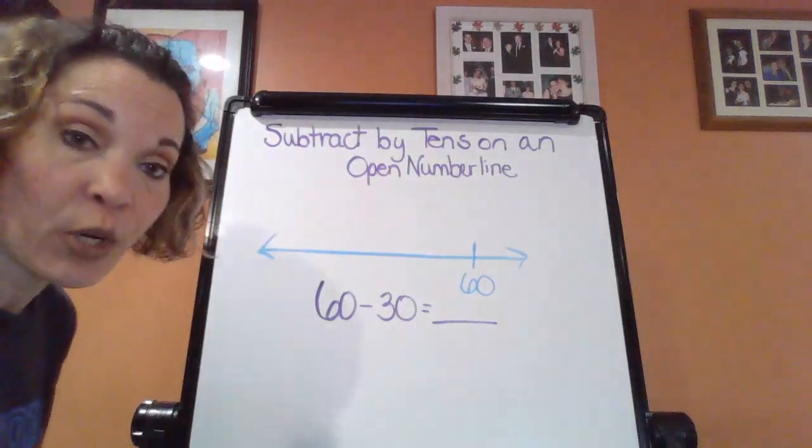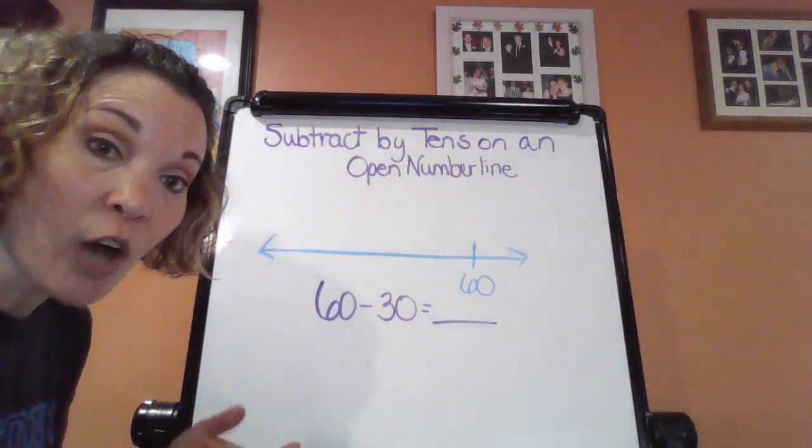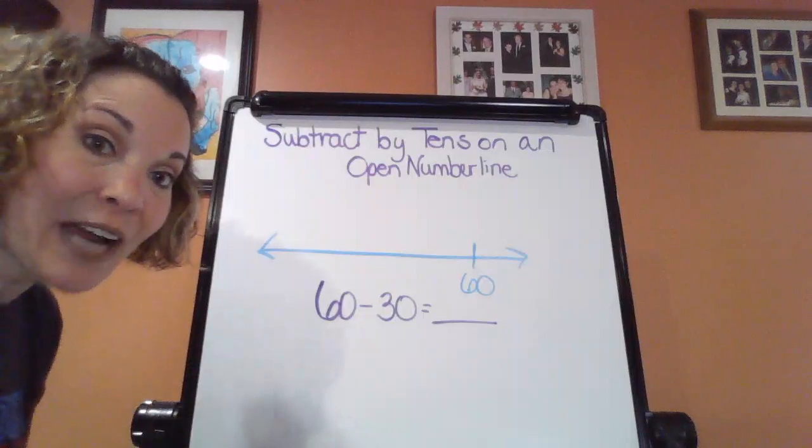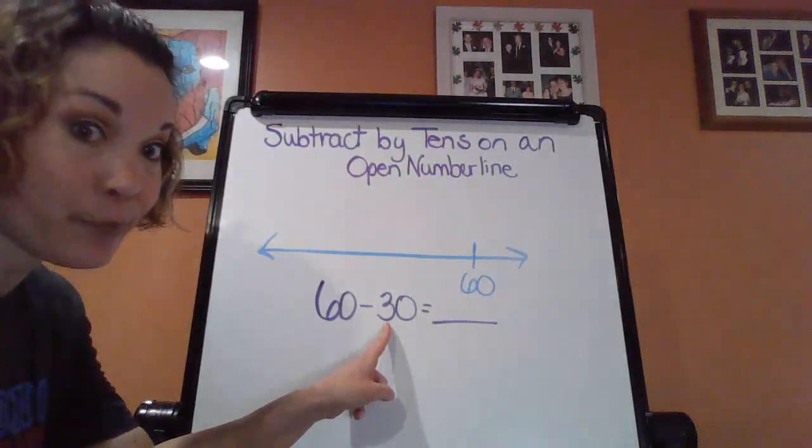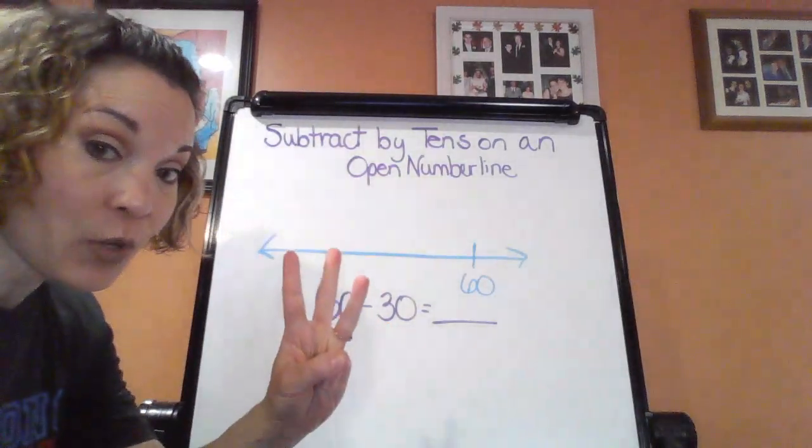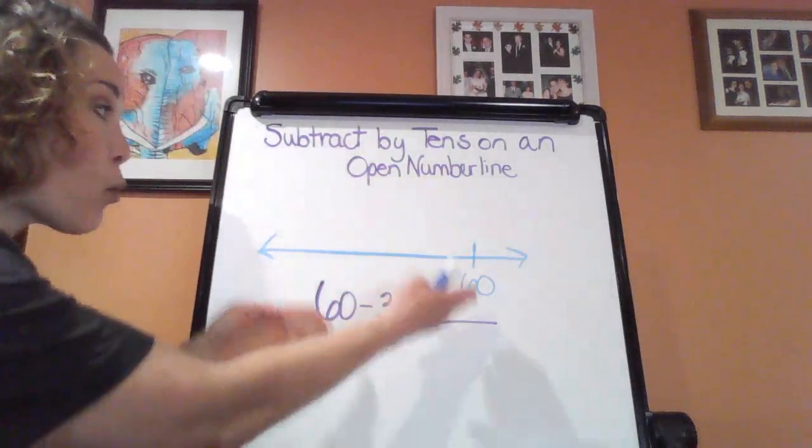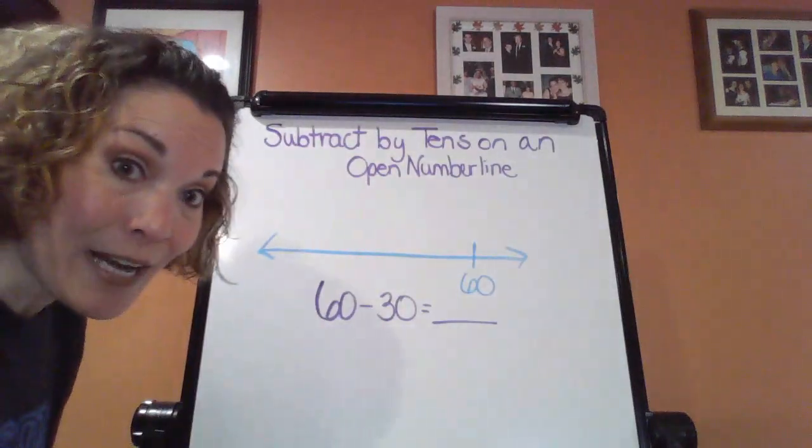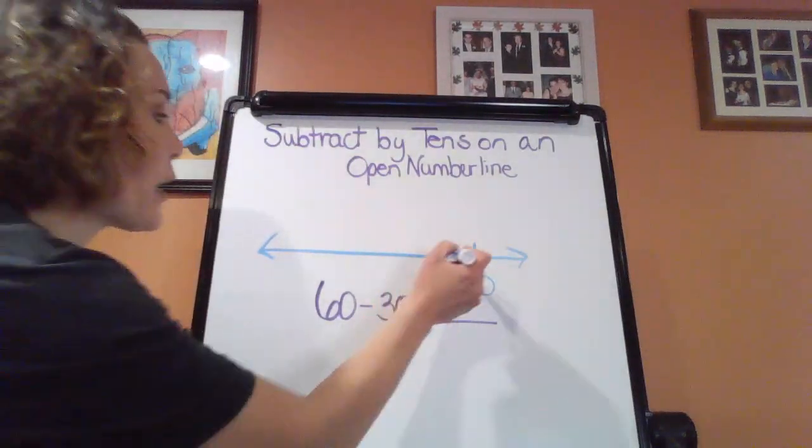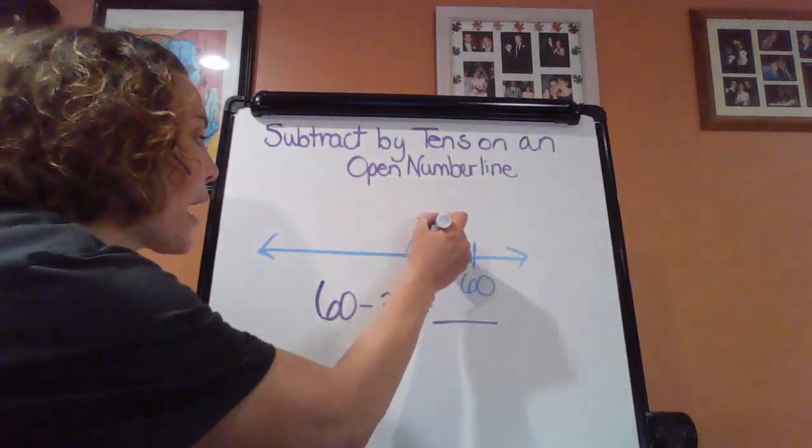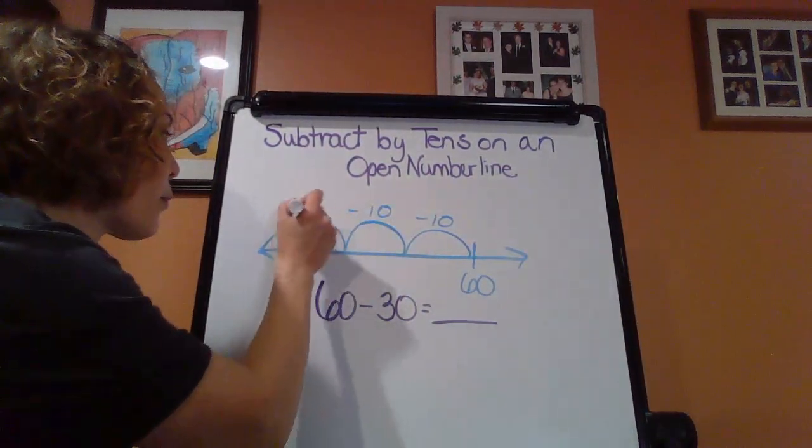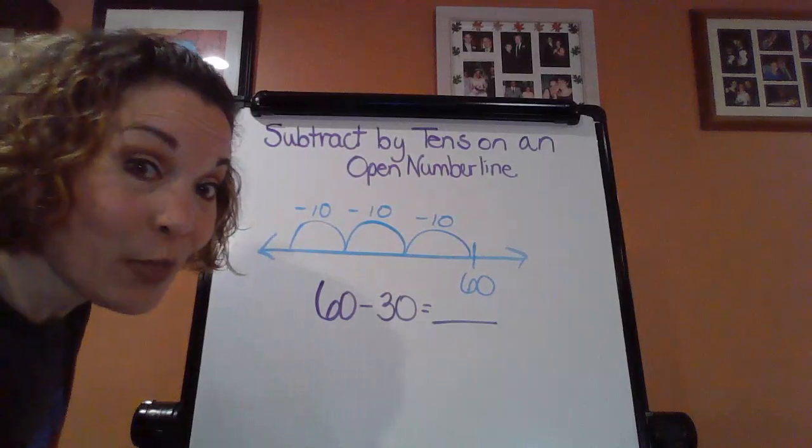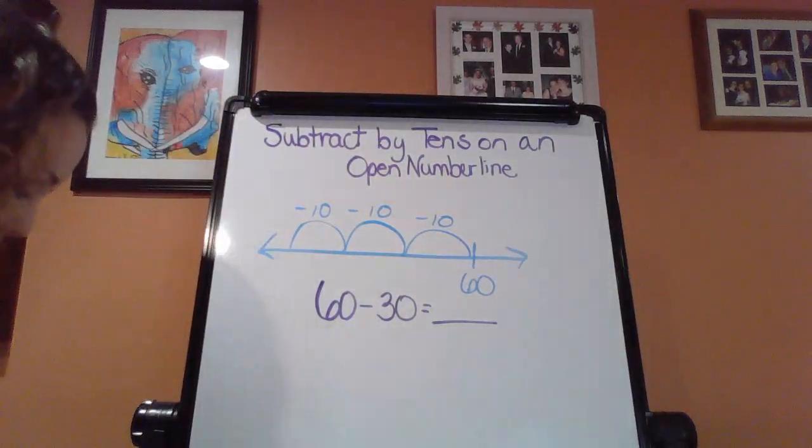So now I'm thinking 30. How many 10s are in 30? How many hops back now am I going to take? Well, if I'm thinking about 30, look at that 10s place. Three. So therefore, I have three 10s. So I want to count back three times. So here I go. There's one 10, two 10s, and three 10s.